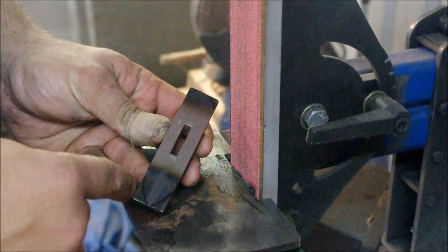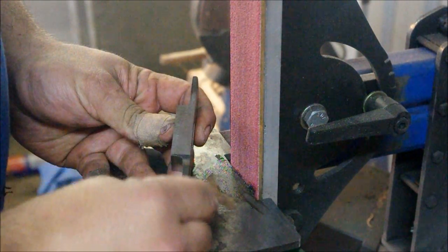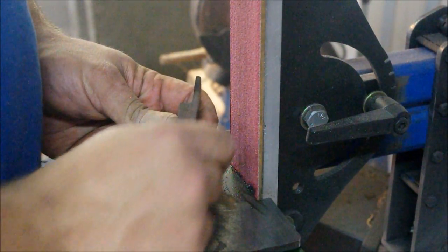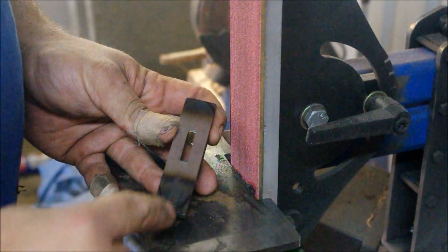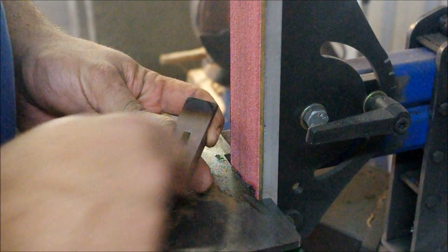So, I've just marked the outside profile. As you can see, the quilons have been brought down to close to their final thickness. Obviously, I'll have to finish that up when I do the finishing grits. I've just marked the oval cross-section of the guard, and now I'm just going to grind that out.